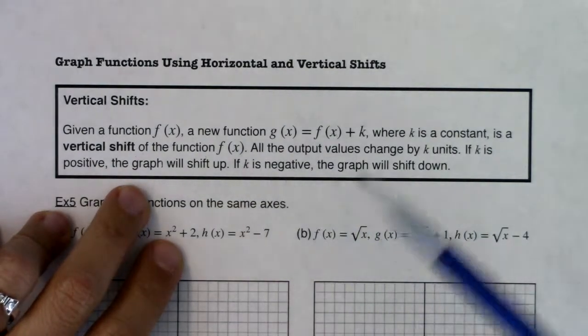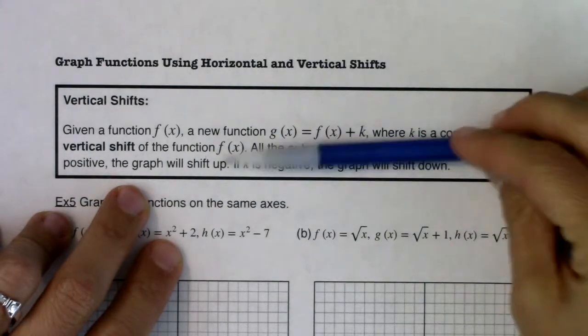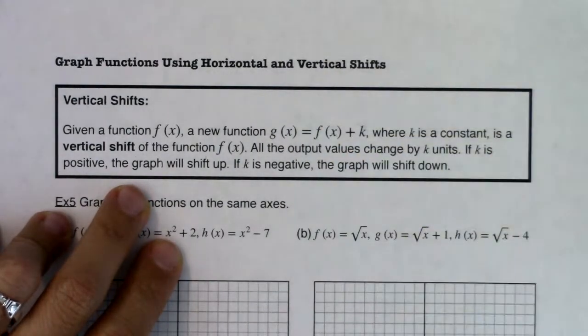If k is positive, the graph will shift up. If k is negative, the graph will shift down.